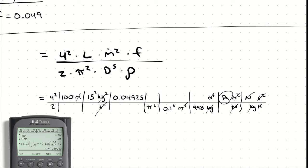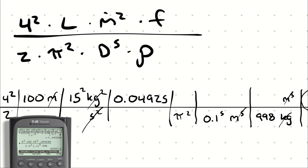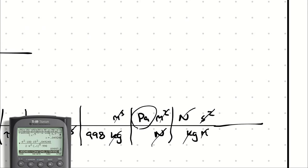So to the calculator again. I have 4 squared, multiplying by 100, multiplied by 15 squared, multiplied by 0.049248, quantity divided by 2 times pi squared, times 0.1 to the fifth power, times 998. We get 89,998. Since that is so large, I'm going to convert it to kilopascals. A kilopascal is 1,000 pascals. That number divided by 1,000 at the end is going to be 89.998.